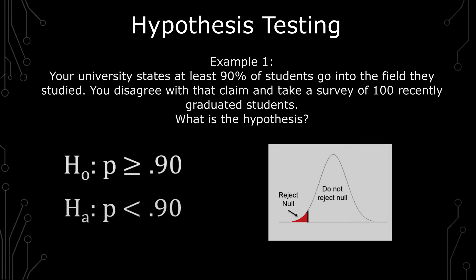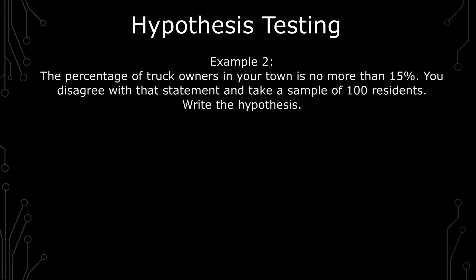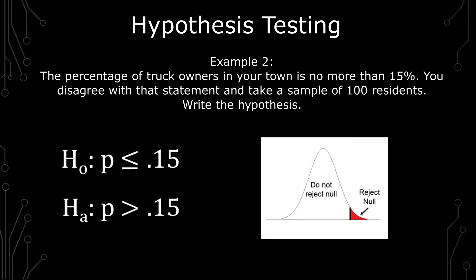The next statement is the percentage of truck owners in your town is no more than 15%. You disagree with that statement, and so you take a sample of 100 residents. Write the hypothesis. The null hypothesis will be p, again, because we're dealing with a percentage, less than or equal to 0.15. The alternative is p is greater than 0.15. This is also a one-tailed test.